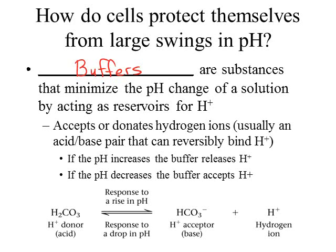If there is a drop in pH, meaning more hydrogen ions are in the solution, the hydrogen ions can combine with the bicarbonate ion — the acceptor base — to form carbonic acid. So as the solution is challenged with H+, the buffer can bind it, and as hydrogen ions decrease, it will release them. These substances are weak acids, such as carbonic acid, and their conjugate base, in this example the bicarbonate ion, and this allows them to act as reservoirs for hydrogen ions.